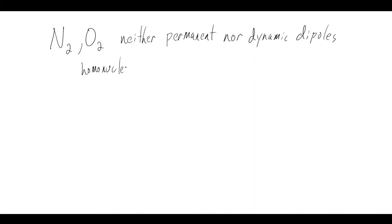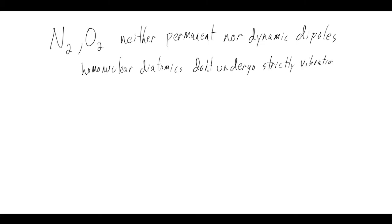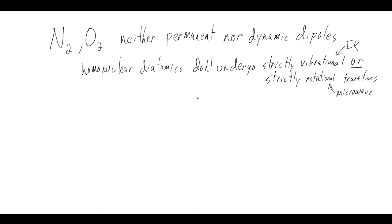Homonuclear diatomics don't undergo strictly vibrational transitions (IR) or strictly rotational transitions (microwave). So what chemical system in everyday life is made up primarily of homonuclear diatomics? Our atmosphere - 70% nitrogen, 21% oxygen, nearly 98% of these two homonuclear diatomics, plus some others like hydrogen.